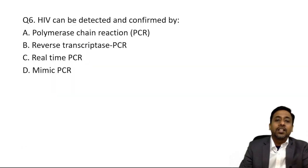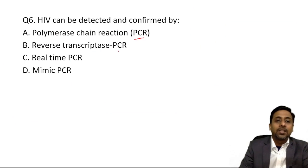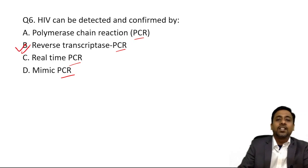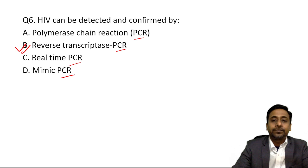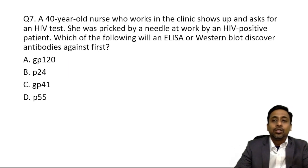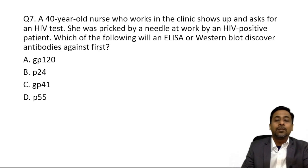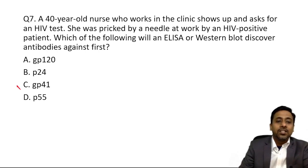HIV can be detected and confirmed by reverse transcriptase PCR — that is the answer. A 40-year-old nurse pricked by a needle from an HIV-positive patient asks which antibody will Western blot discover first. The first antibody will appear against GP41, so the answer is GP41.